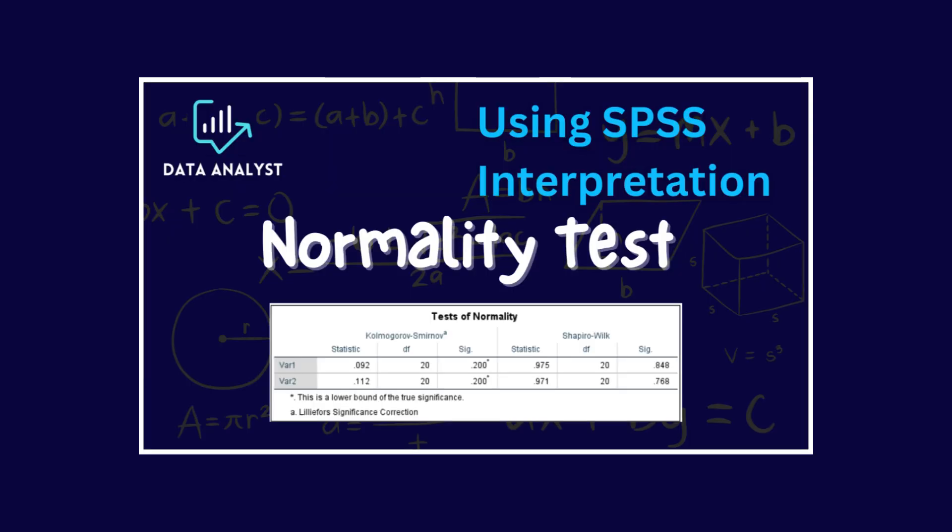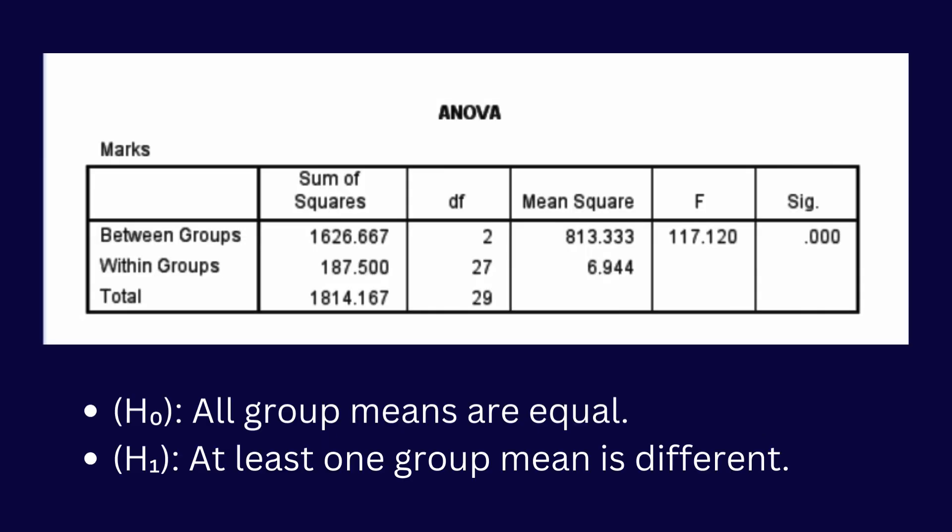If you want to check the normality of your data, please watch my previous video — I will attach that video link in the description box. This is the ANOVA table and we got 0 as our p-value. Since the p-value is less than 0.05, we reject the null hypothesis. This indicates that there are statistically significant differences between the means of the groups. In other words, at least one group mean is significantly different from the others. The large F-statistic and the very low p-value suggest that the differences between the groups are substantial and not due to random variation.